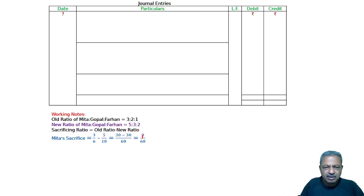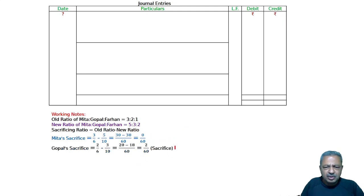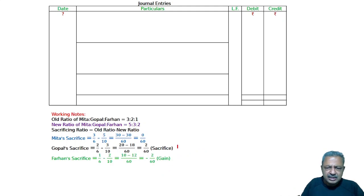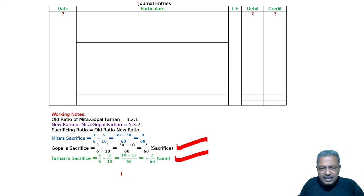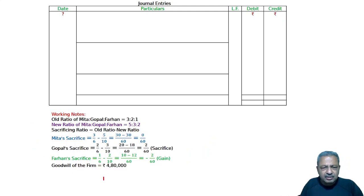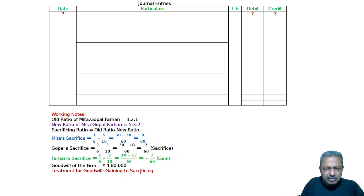Mitha's sacrificing ratio is 0. Gopal's gain is 2/60 and Farhan's gain is 2/60. The sacrifice is 1/30. The goodwill of the firm is 4,80,000. The entire goodwill treatment is on a gaining-to-sacrificing basis — Farhan will give to Gopal. Goodwill amount: 4,80,000 × 2/60 = 16,000.